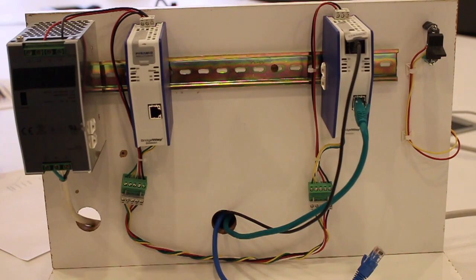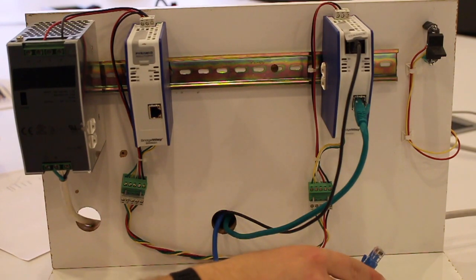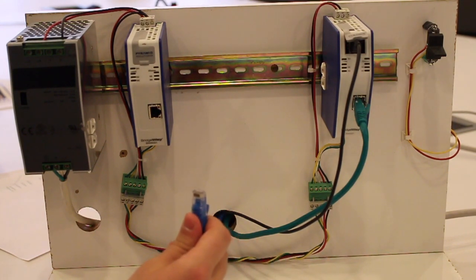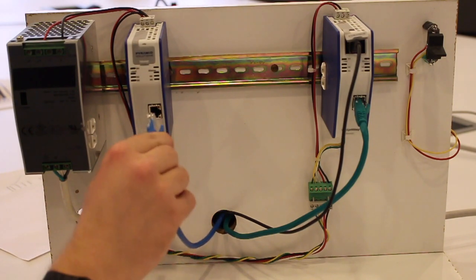Now we need to connect the Ethernet network. Simply plug the Ethernet RJ45 cable connector into the RJ45 socket located on the front of the device.